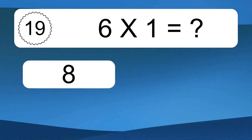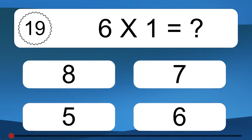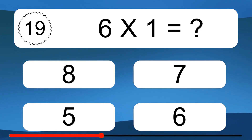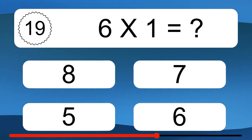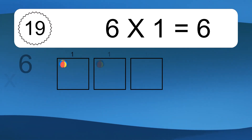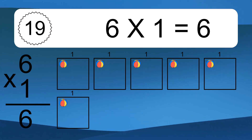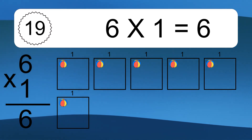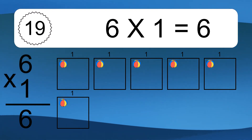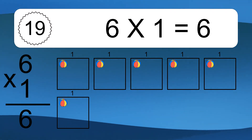6 times 1 equals what? 6 times 1 equals 6. We have 6 boxes, and each box has 1 colorful ball inside. If you count all the balls in all the boxes together, you will have 6 times 1 balls. This equals 6 balls.